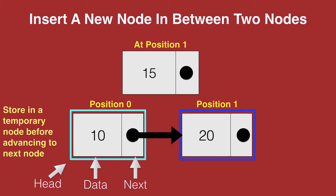Once we do that, we can remove the connection from 10 to 20 and then establish the connection from 10 to 15. The next of 15 now points to the node at position 1, and that completes the connection.